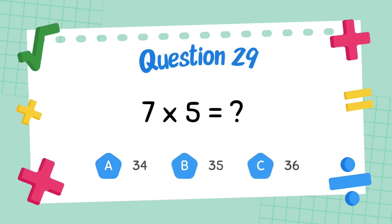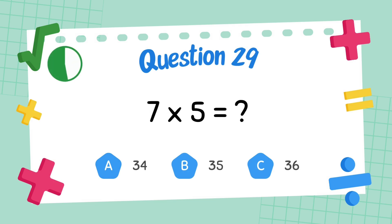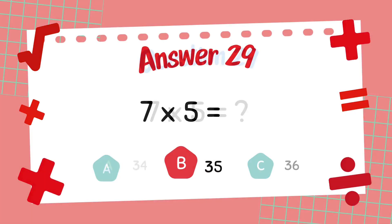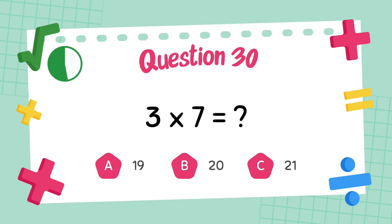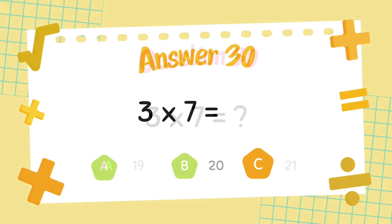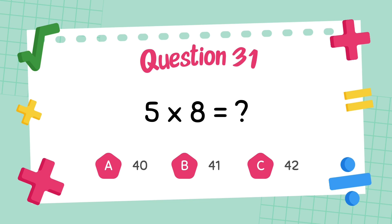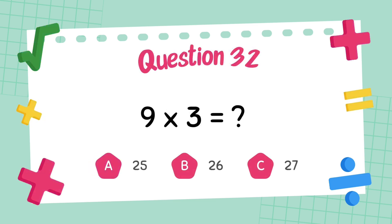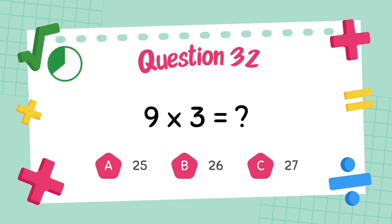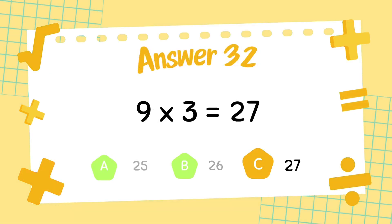What is 7 multiply 5? The answer is 35. What is 3 multiply 7? The answer is 21. What is 5 multiply 8? The answer is 40. What is 9 multiply 3? The answer is 27.